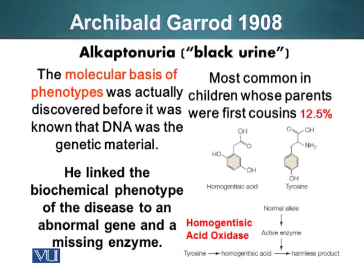It so happens that the molecular basis of phenotypes was discovered before it was known that DNA is the genetic material. We will start with the experiments of Archibald Garrod. In 1908, Garrod was studying a disease called alkaptonuria, or black urine disease. He noticed a prevalence of this condition in children of consanguineous marriages — marriages between cousins or close relatives — who had a higher rate of suffering from this disorder.